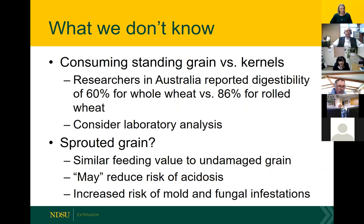It's important to provide high levels of roughage — provide free choice hay out on pasture if possible. Consider providing buffers such as limestone or sodium bicarbonate and/or ionophores to limit digestive disturbances. Grazing standing grain versus feeding wheat grain changes the situation. Researchers in Australia reported digestibility decreased by over 25 percent when feeding whole wheat with its seed coat versus rolled wheat. This may help reduce the risk of digestive disorders, but we can't say for sure based on individual situations.